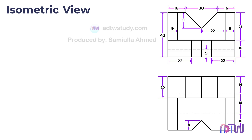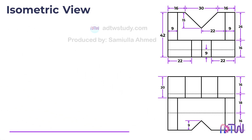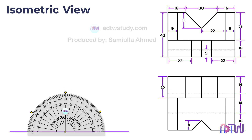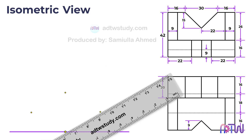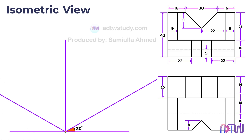We first need to create the isometric axis. To do this, take a ruler and draw a horizontal line, then mark a center point on this line. Next, take a protractor and mark 30 degrees on both sides of the center point as well as 90 degrees. Draw lines passing through these points from the center point. The line through the 30-degree mark will be the x-axis, the line through the 90-degree mark will be the y-axis, and the remaining line will be the z-axis.